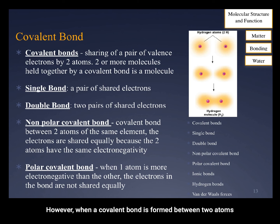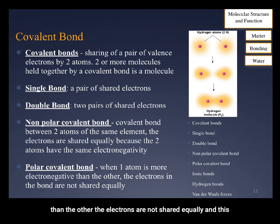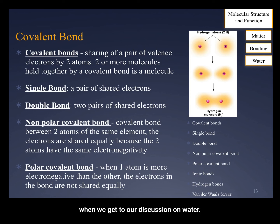However, when a covalent bond is formed between two atoms of differing elements and one atom is more electronegative than the other, the electrons are not shared equally, and this results in a polar covalent bond, which we'll discuss more when we get to our discussion on water.